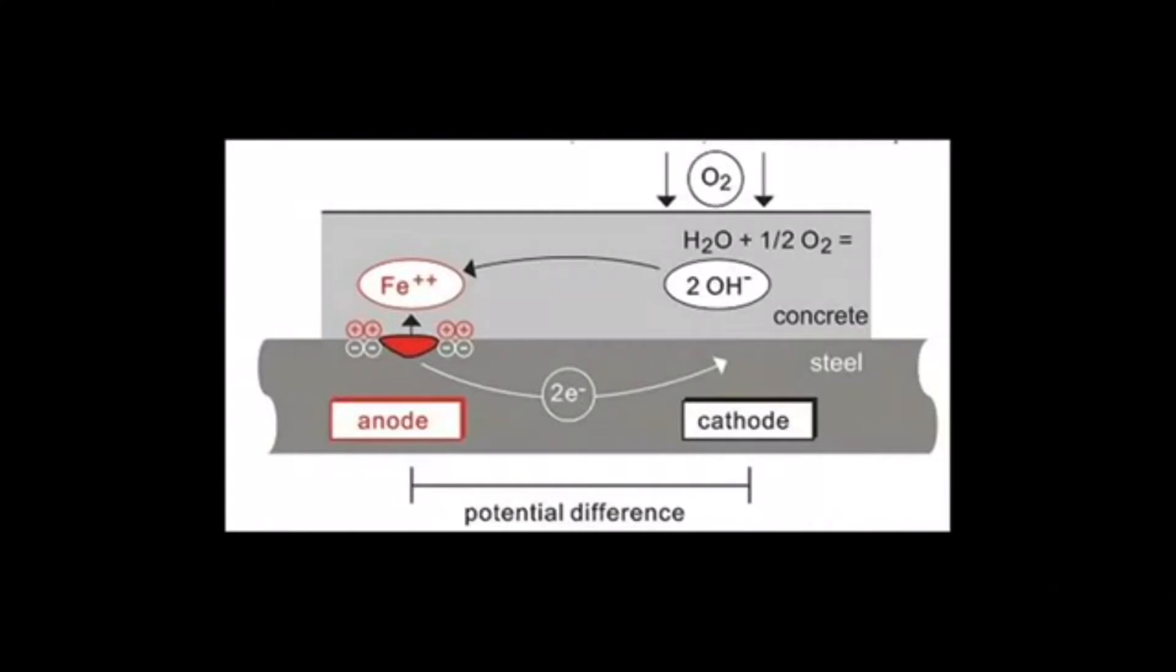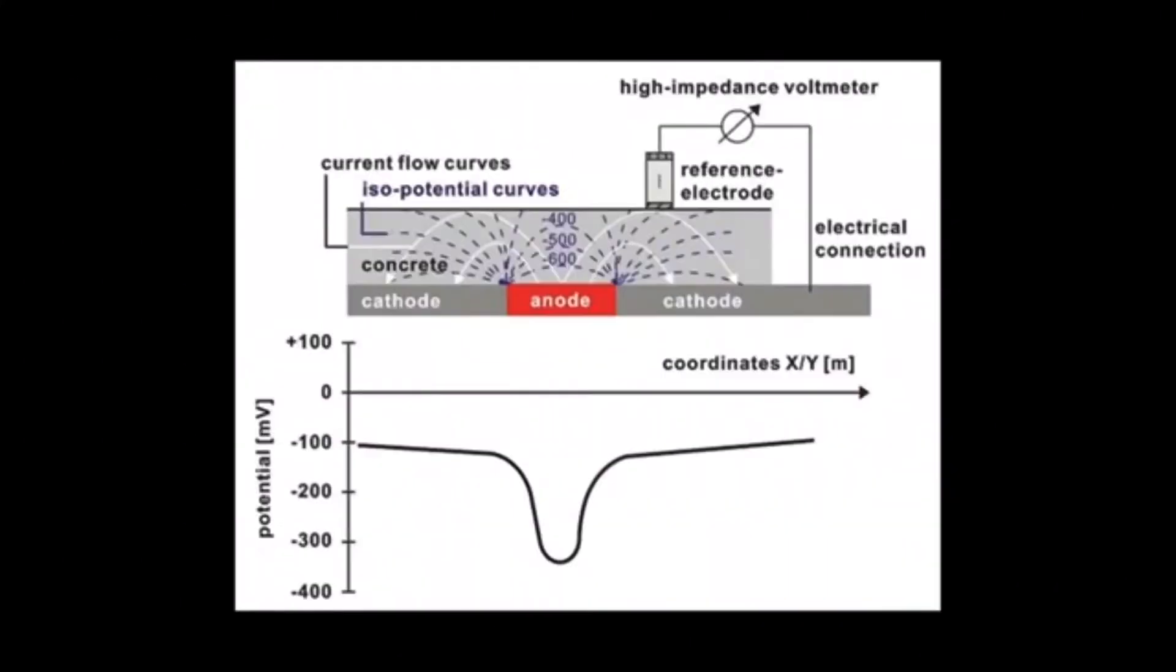This principle creates a potential difference that can be measured by the half-cell method. As the half-cell probe is moved across the concrete surface, the variation in the potentials measured allows the localization of the corrosion hotspot.